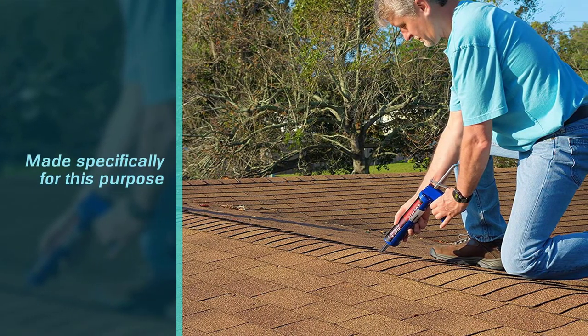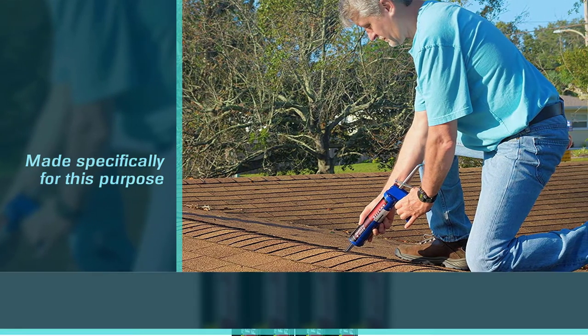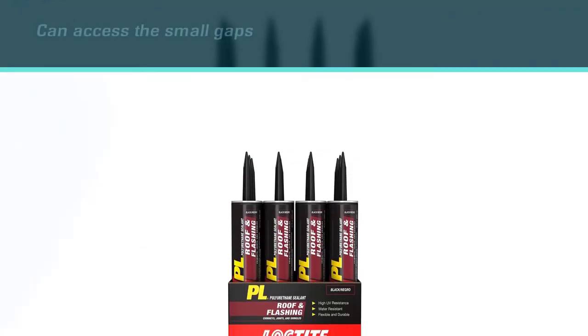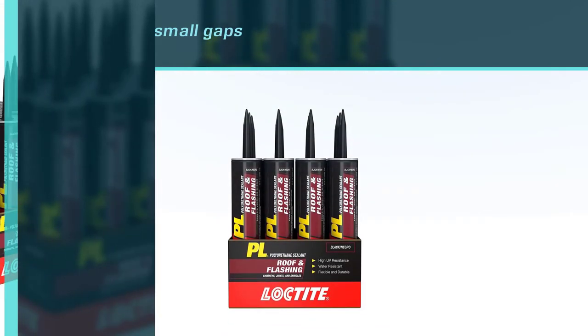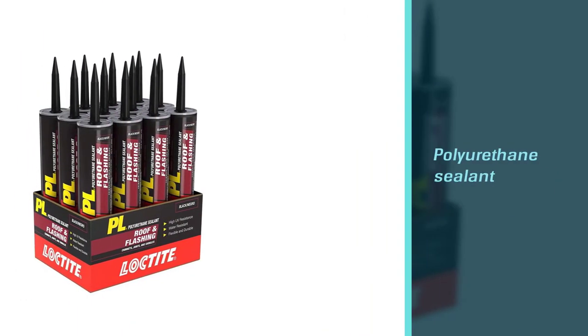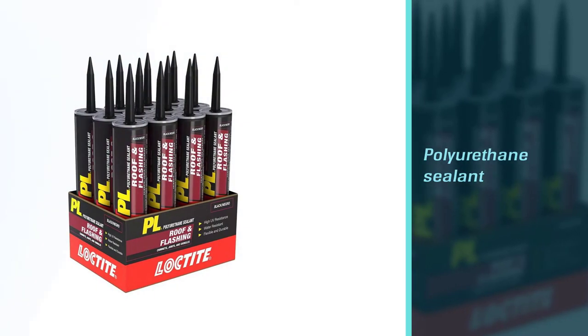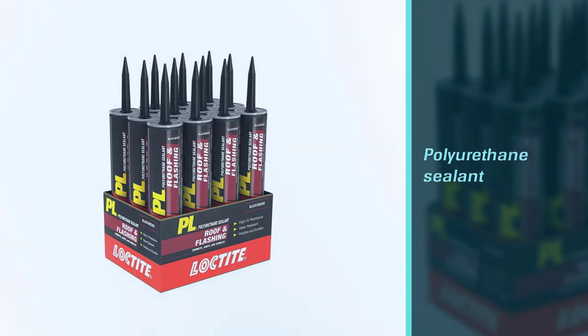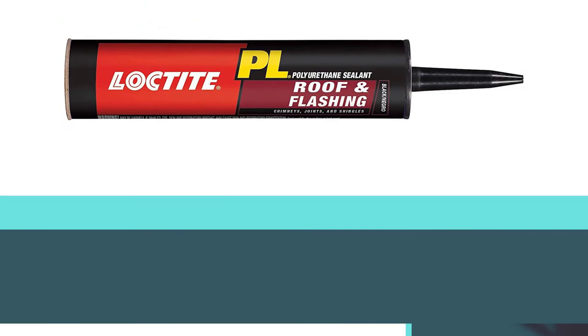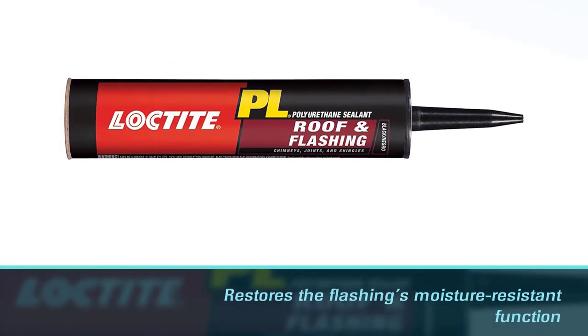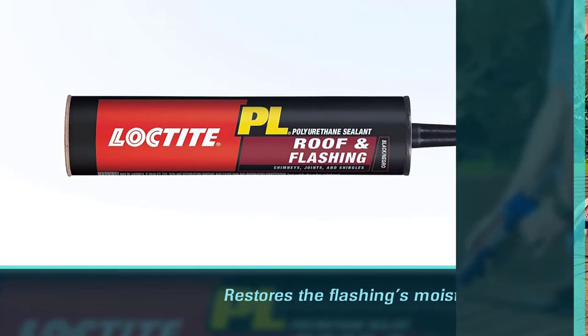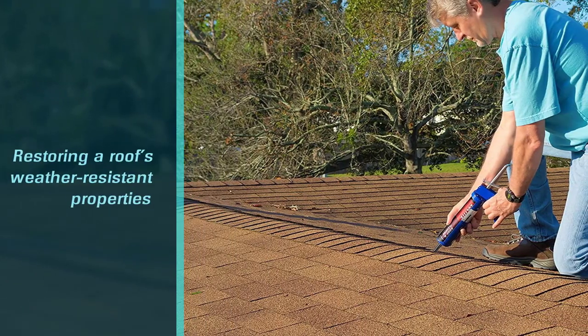Loctite's roof flashing sealant was made specifically for this purpose. As a caulk, it can access the small gaps created by damaged flashing and the polyurethane sealant restores the flashing's moisture resistant function. It also functions as an adhesive which means it will help close the gap between the flashing and the roof, which further assists in restoring a roof's weather resistant properties.